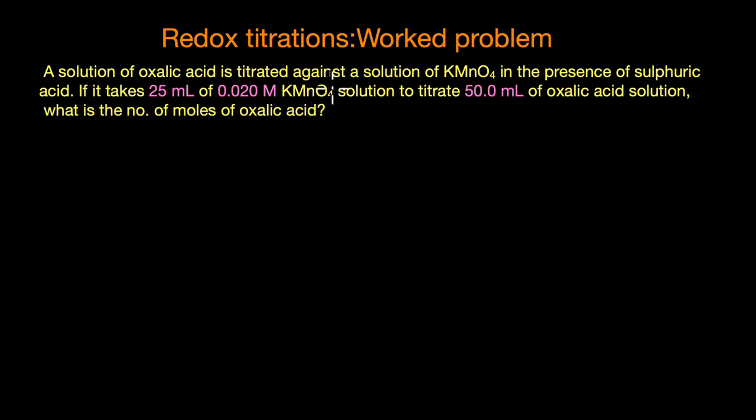This is a classic example of a redox titration. As we know, potassium permanganate in acidic solution acts as a very strong oxidizing agent, and it not only acts as an oxidizing agent but also as a self-indicator in titrations.